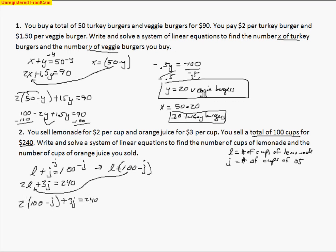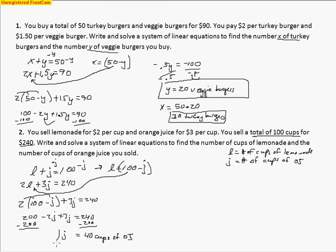Distributing gives 200 minus 2J plus 3J equals 240. Subtracting 200 from both sides, I'm left with J equals 40. So J represented orange juice — 40 cups of OJ. Now to find lemonade: L equals 100 minus 40, which is 60. So 60 cups of lemonade.